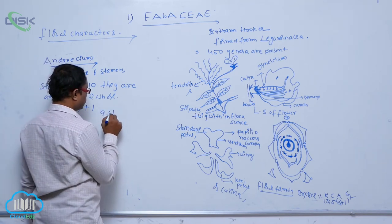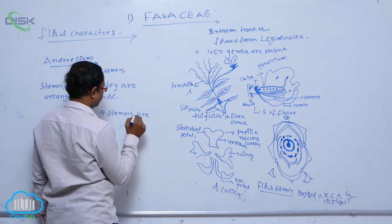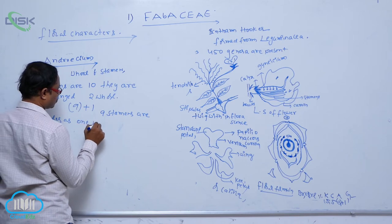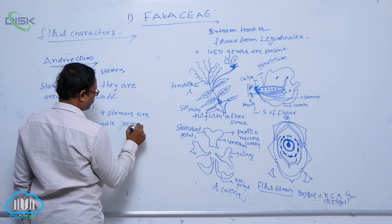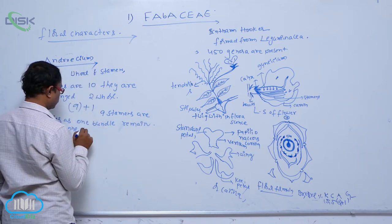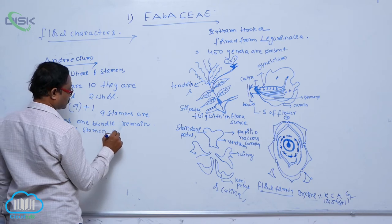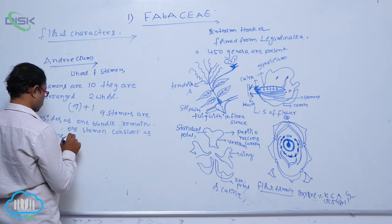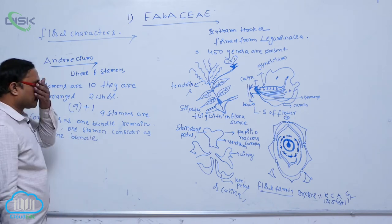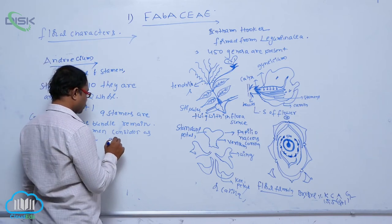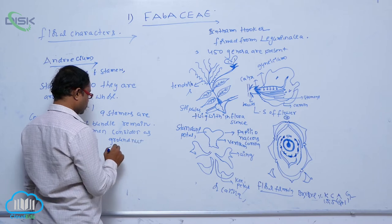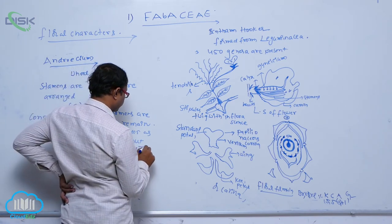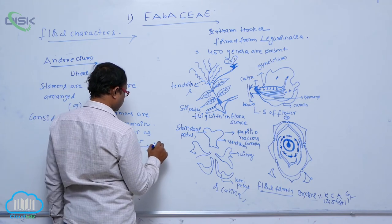In this, nine stamens are considered as one bundle and the remaining one stamen is considered as a separate bundle. But in Arachis hypogea — ground nut — this is an important point: ten stamens are fused, which is known as monodelphous.